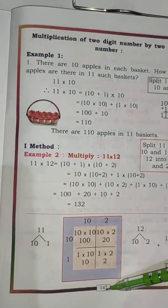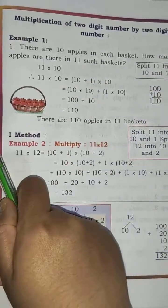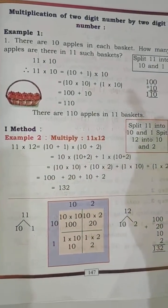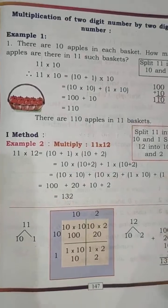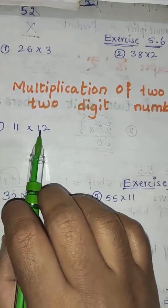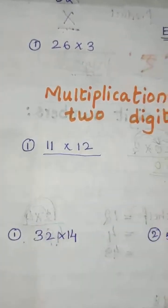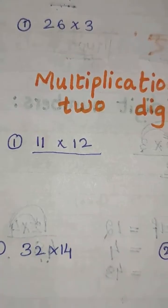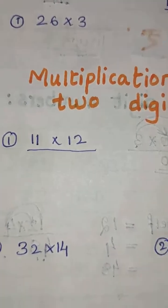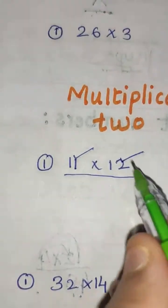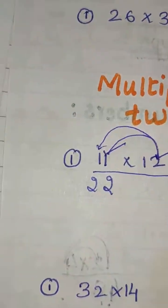Now children, open page number 147. There is another concept: multiplication of two-digit numbers by two-digit numbers. Till now we have done multiplication of a two-digit number by a one-digit number. Now we are going to do multiplication of a two-digit number by a two-digit number. The multiplicand is of two digits and the multiplier is also of two digits. We will put a line here. Always we have to start multiplying from the unit place, whether it is in the multiplier or in the multiplicand.